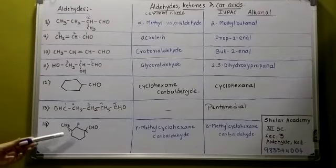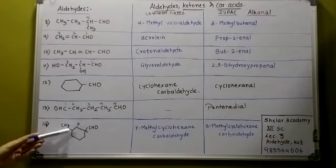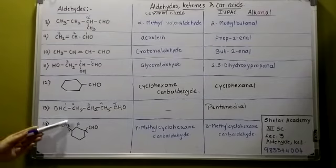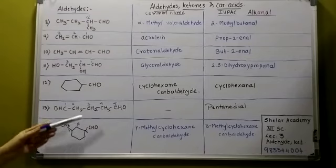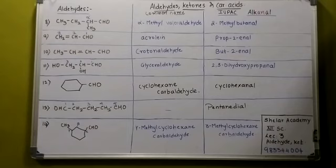Now, if you have a compound like this — alpha, beta, gamma positions on the ring. The common name is gamma-methyl-cyclohexane-carbaldehyde. The IUPAC name of the compound is 3-methyl-cyclohexane-carbaldehyde. We will proceed with the same in the next lecture.